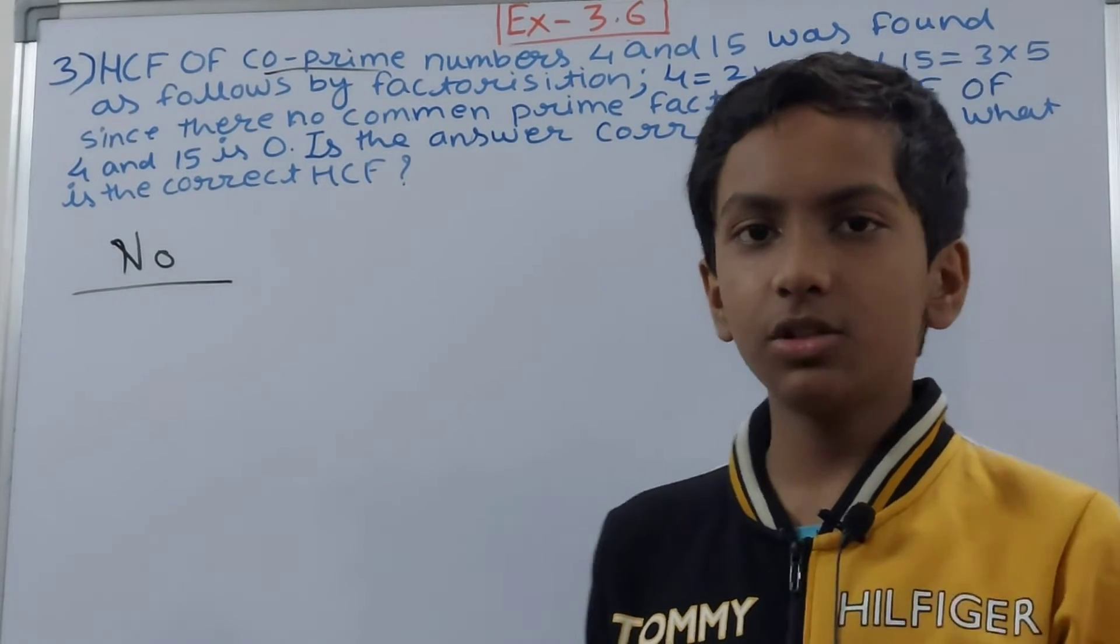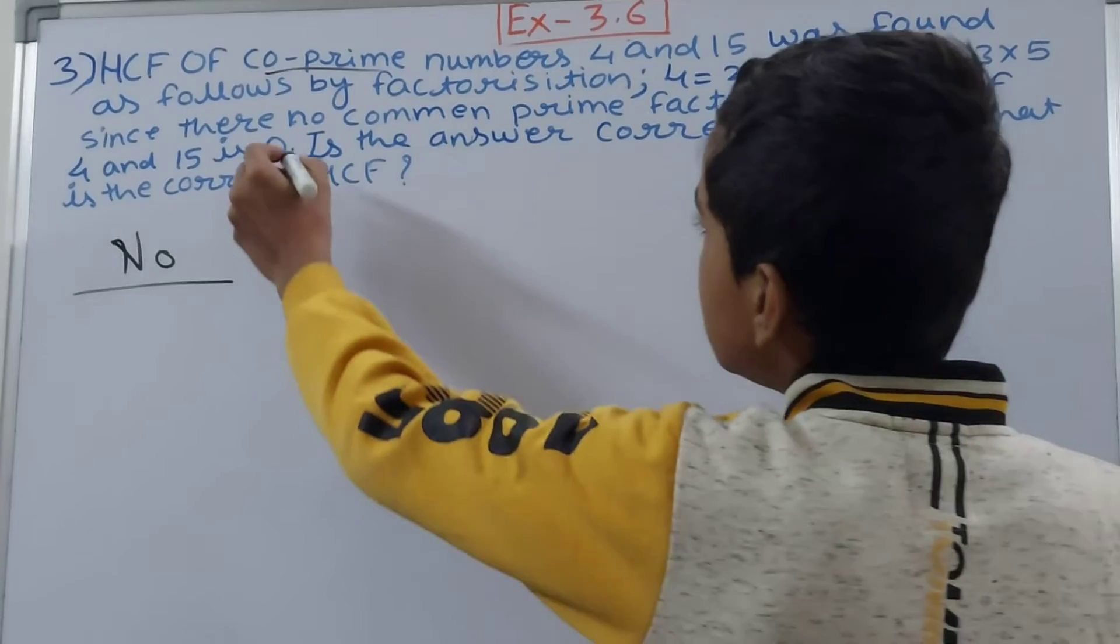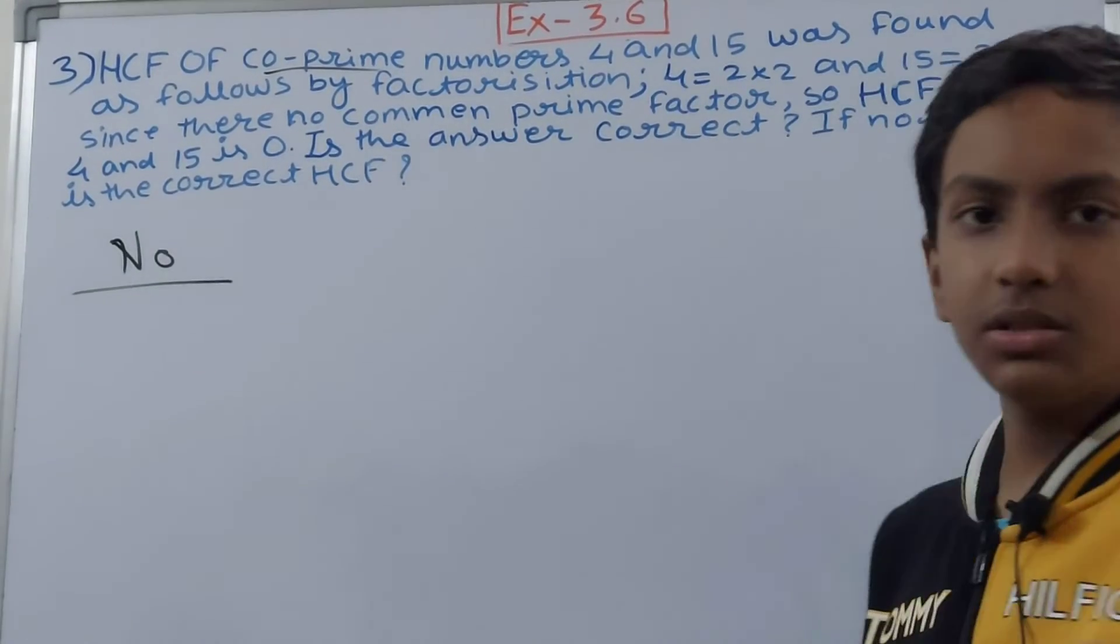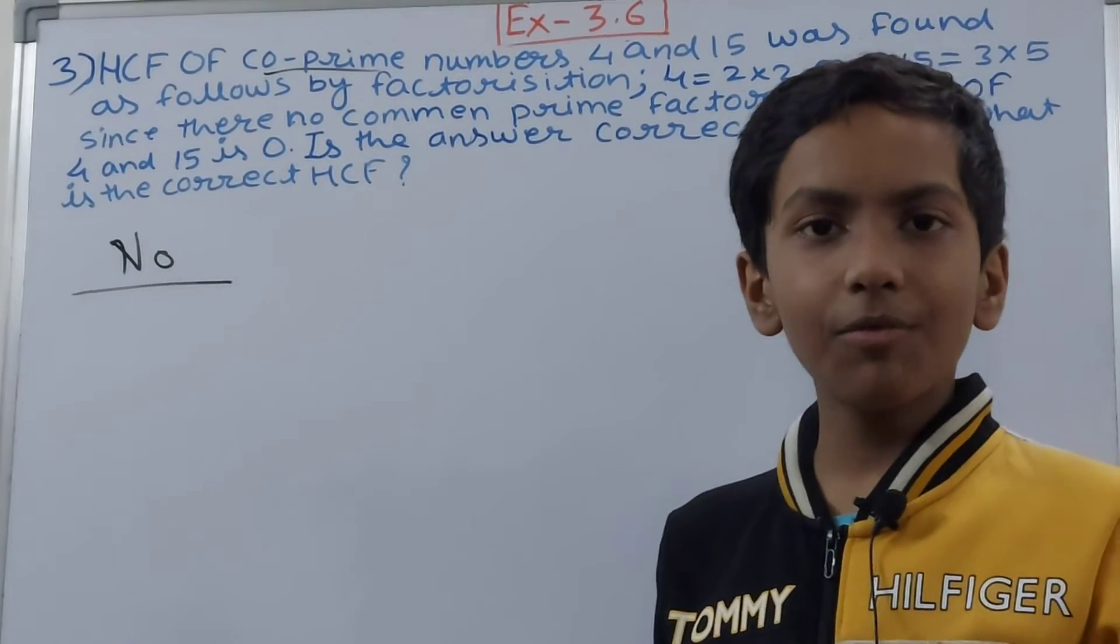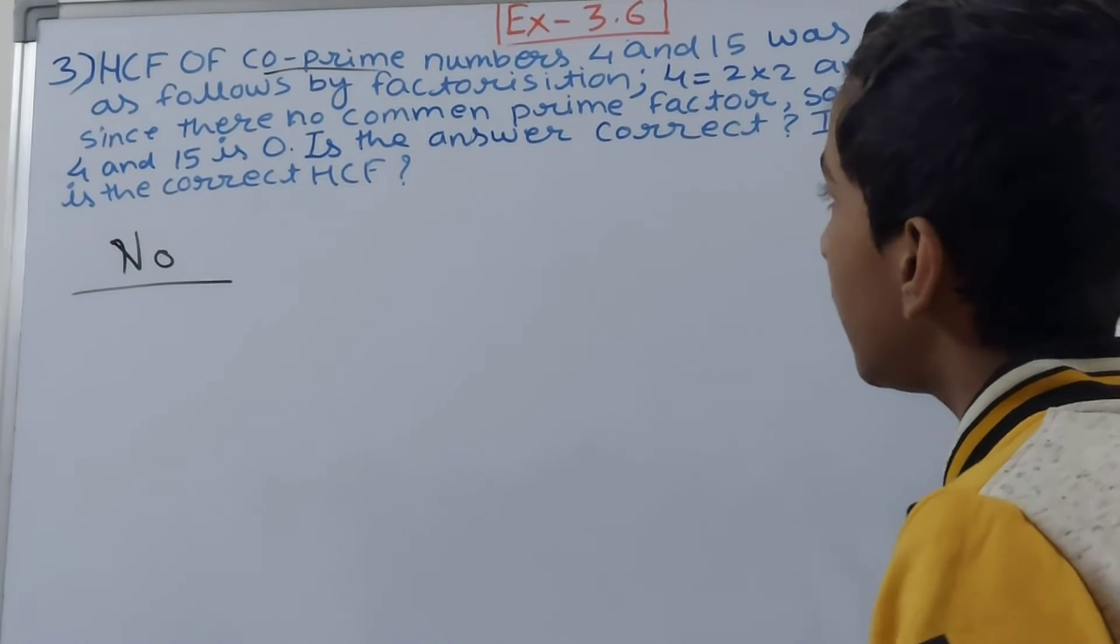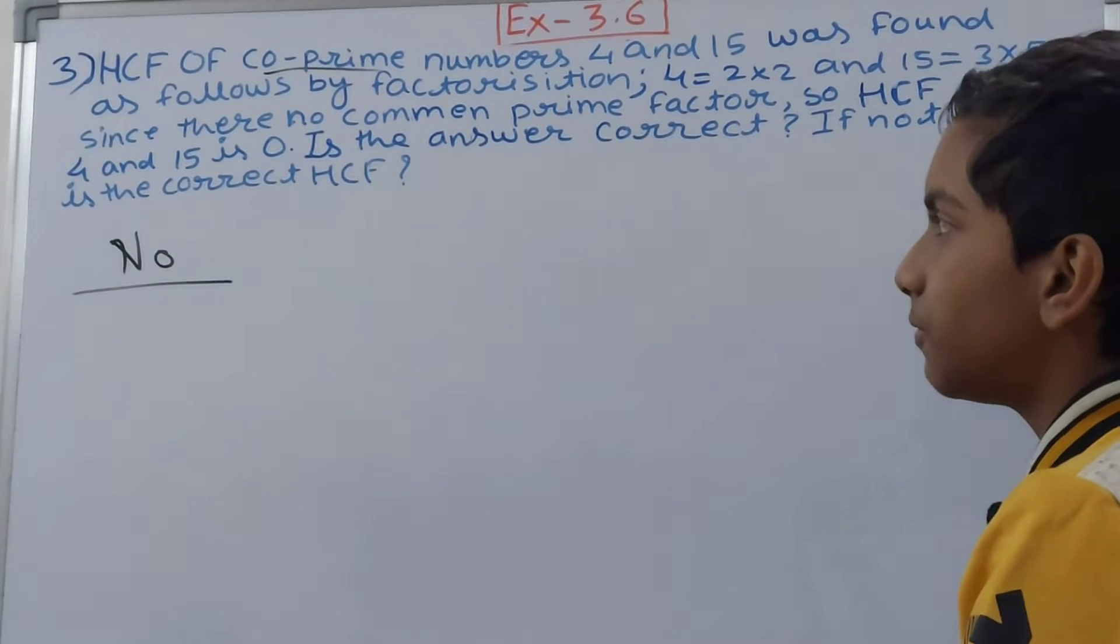They have only and only one as their common factor here. And it is taking here zero, so how can it take zero? Zero is not the common factor, but one is the common factor, right? And they don't have any other common factor in them.